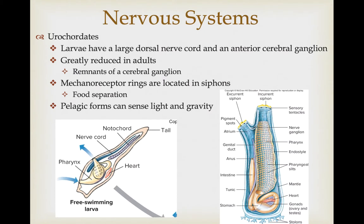As for the urochordates, the larvae have a large dorsal nerve cord running the length of the body with an anterior cerebral ganglion, but during development this is greatly reduced in adults. They show a remnant of the cerebral ganglion and have mechanoreceptors forming rings around the siphons, used for food separation as they pump water through their body. Most tunicates are sessile, but pelagic forms have more sensory structures for sensing light direction and gravity.